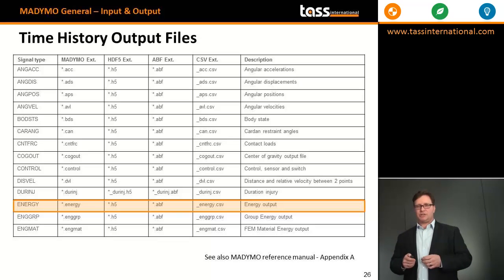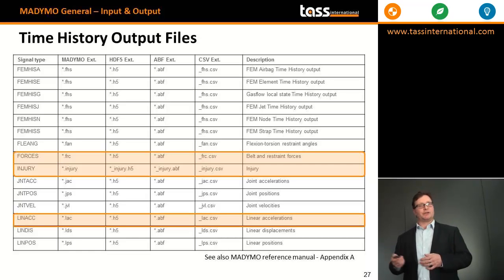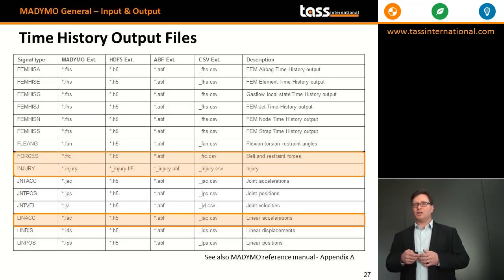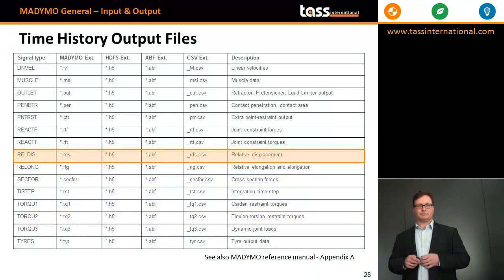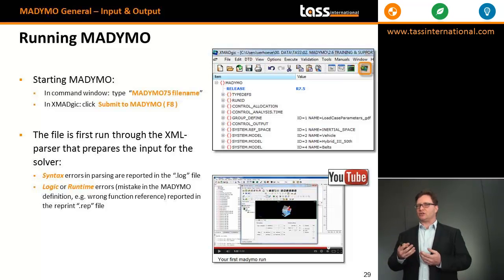Another example of a Madimo output file is the file containing relative displacements between specific entities. Now that you have a complete overview of the Madimo input and output files, the next step is to run your Madimo simulation. This can be done by opening a command file or by pressing the Run Madimo icon in XMagic. If you need assistance, have a look at the YouTube video 'Your First Madimo Run.' Thank you for your attention.